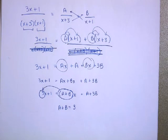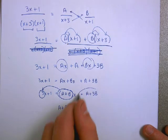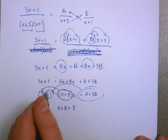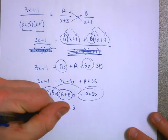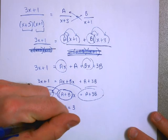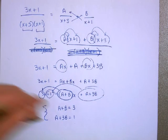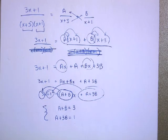Likewise, things without the x. If I see that I have an A and a 3B here, and I add them together, they must add up to 1. A+3B must equal 1. Now look what I have. A system of two equations with two unknowns I can solve for that.